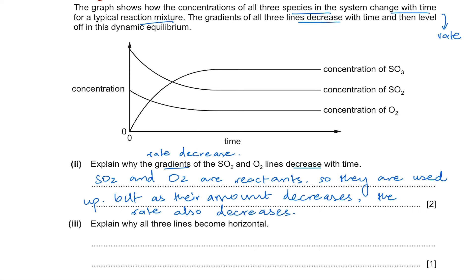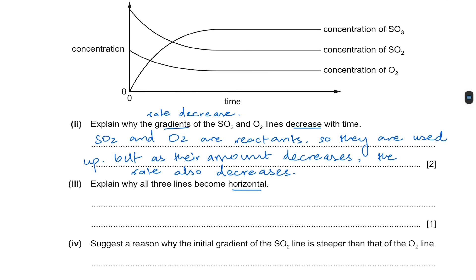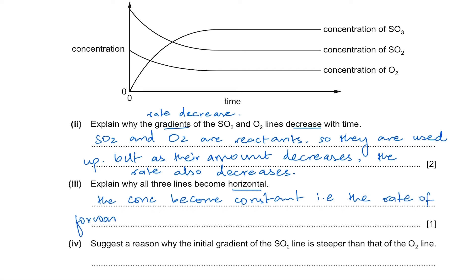Part 2 asks why all three lines become horizontal. The lines become horizontal because concentration becomes constant, which means the rate of the forward reaction is equal to the rate of the reverse reaction. That is when we say equilibrium is established.